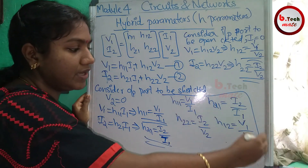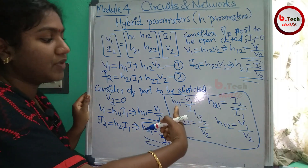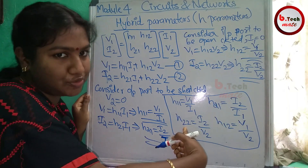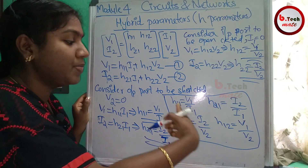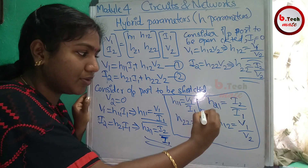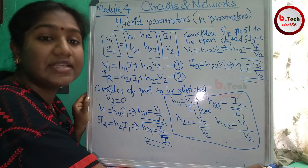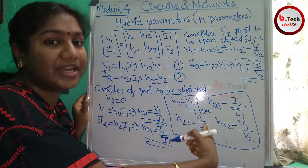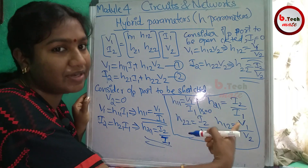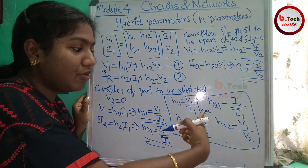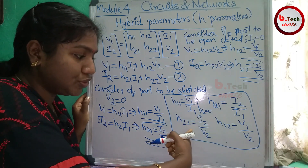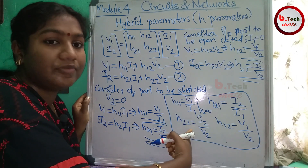So we have four h-parameters. H11 is similar to Z11, and H22 is similar to Y22. For H11, the condition is output port short circuit (V2 = 0), similar to the condition for Z11. For H22, the condition is input port open circuit (I1 = 0), and H22 is similar to Y22.